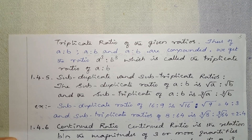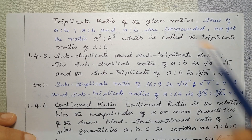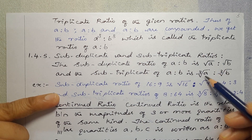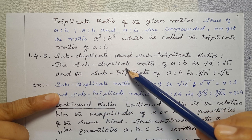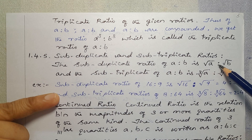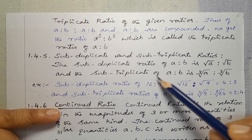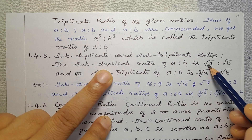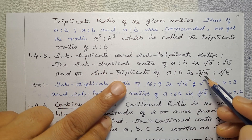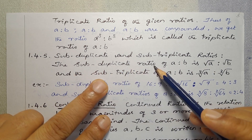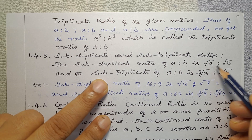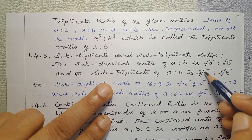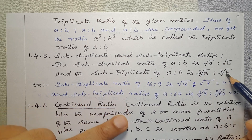Next, Sub-Article 1.4.5 — Sub-duplicate and Sub-triplicate Ratios. Sub-duplicate means square root; sub-triplicate means cube root. The sub-duplicate ratio of A is to B is the square root of A is to the square root of B. The sub-triplicate ratio of A is to B is the cube root of A is to the cube root of B.